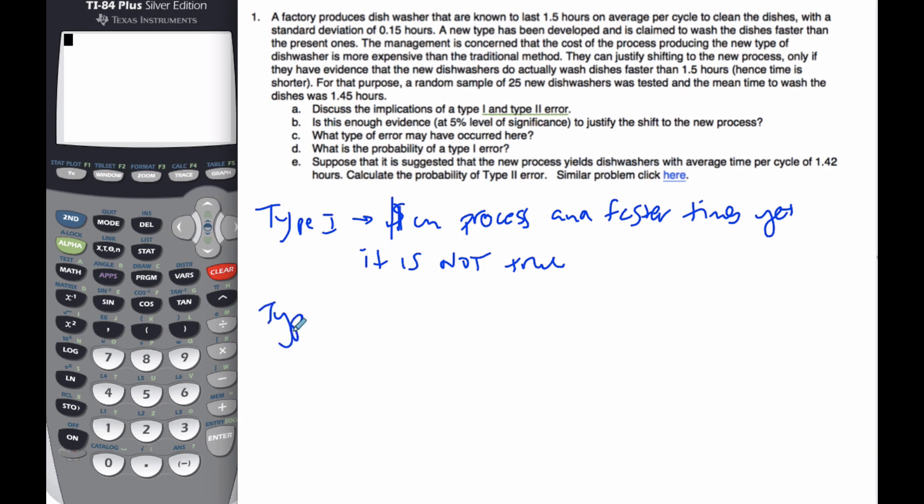The type 2 error happens if we do not reject the null hypothesis, but we should have done so. So if that's the case, well, then it is a missed opportunity. We could have had the dishwasher, we could have been making all this extra money on new dishwashers, making this new process, but we didn't do it. And so there's a missed opportunity to make money, to make a profit. So no extra profit. That's the implication of the type 2 error.